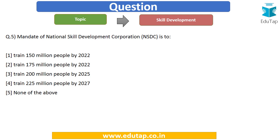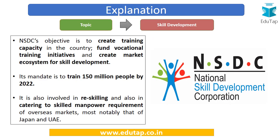The next question: the mandate of National Skill Development Corporation or NSDC is to — options are: (A) train 150 million people by 2022, (B) train 175 million people by 2022, (C) train 200 million people by 2025, (D) train 225 million people by 2027, or (E) none of the above. This question asks about the specific target set for NSDC.